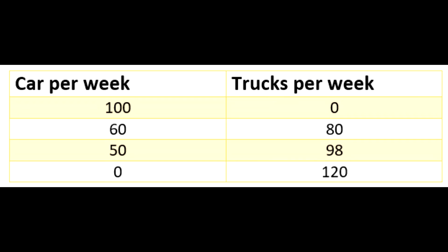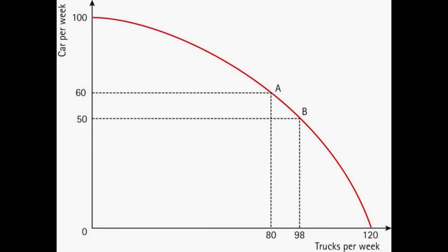As you can see from the chart, if I spend all my time producing cars, we can make 100 cars per week. If we just make trucks, we can make 120 trucks. If we plot this curve, we can show how many we can make of each item. Everything inside the curve is possible, but we are not being our most efficient. Everything outside the curve is not possible unless we expand the amount of resources we have. The production on the line is the most efficient use of the resources. If we shift the production from 80 to 98 trucks per week, we reduce the number of cars we can make from 60 to 50. So our opportunity cost for 18 more trucks per week is 10 cars per week.